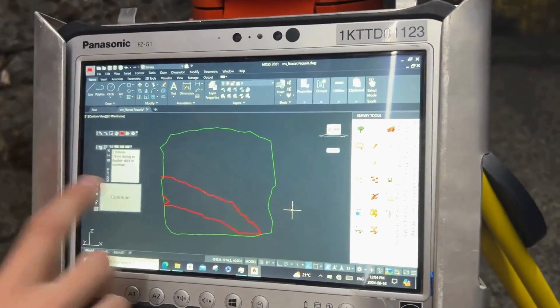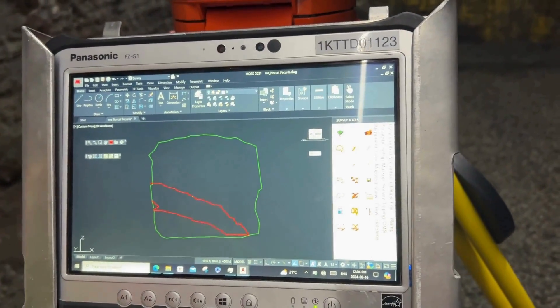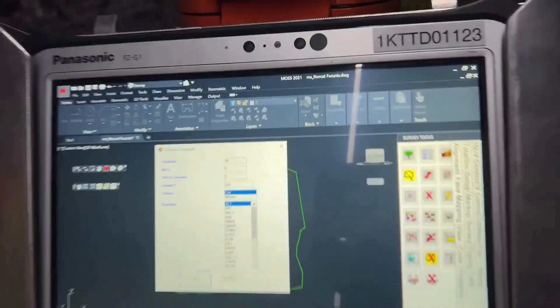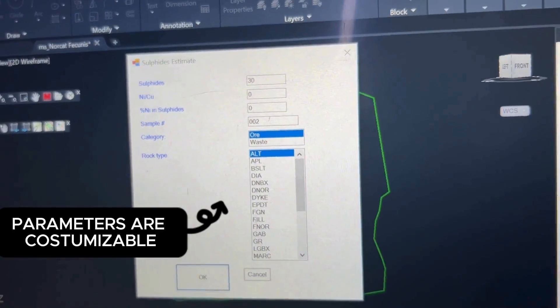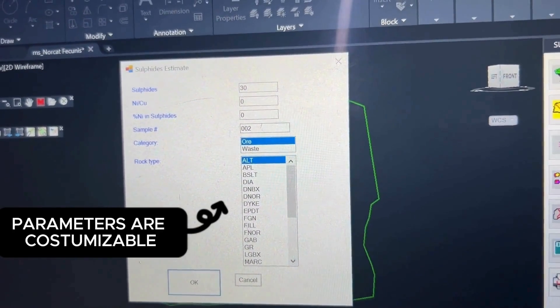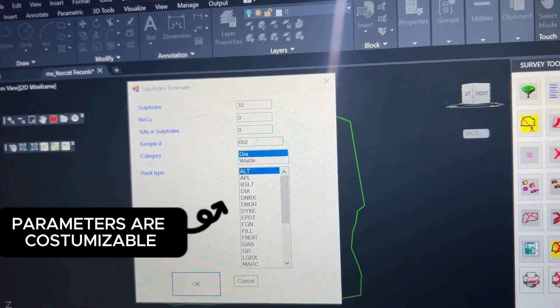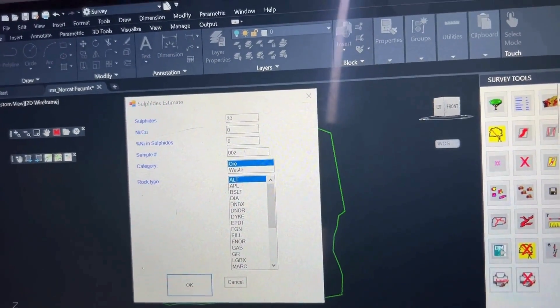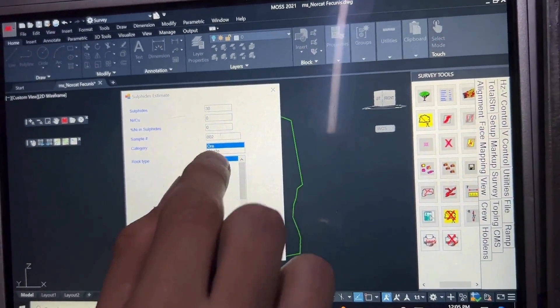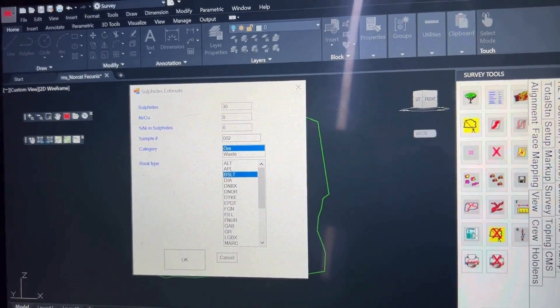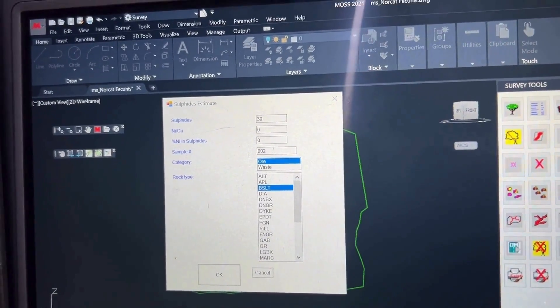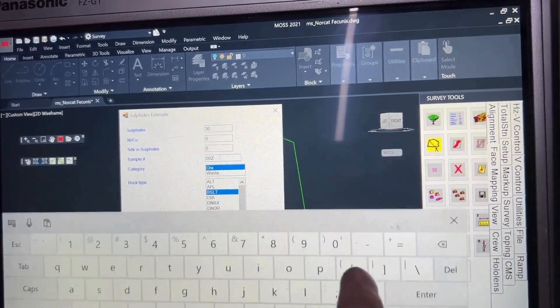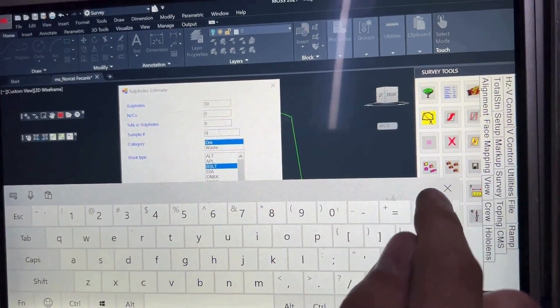We'll press continue. Now what it'll do, it'll track that location in space. It'll give us a little interactive display here. So as you can see, we've got sulfides. We've got nickel/copper, nickel percent in sulfides, sample ID, category, or waste. And we've also got rock type. So for this example, let's say this is basalt. And we'll say we've got 30% sulfides. All of these parameters are customizable. And we'll say that this is sample, we'll just call it 1, 2, 3.